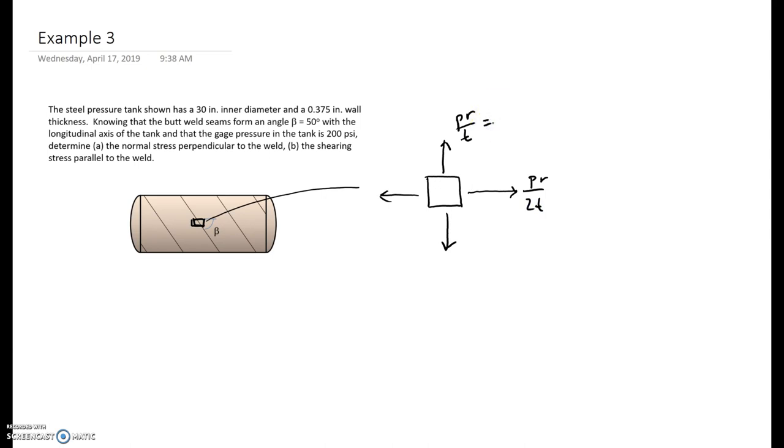In this case, the pressure is 200 psi, the radius of the tank is half of 30 inches, 15 inches, and then the thickness of the tank is 3/8 of an inch, 0.375 inches. So when you calculate that, that gives you 8,000 psi, or 8 KSI. Since the longitudinal stress is PR over 2T, it's just going to be half of that, 4 KSI.